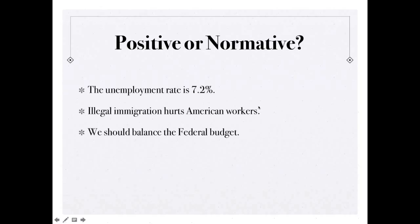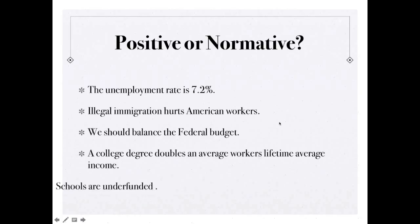We should balance the federal budget. This is also a normative statement. A college degree doubles an average worker's lifetime earnings. This is a positive statement. We could look at the evidence and prove whether this is true or false. Schools are underfunded. This is a normative statement because we don't know the appropriate level of funding for schools.